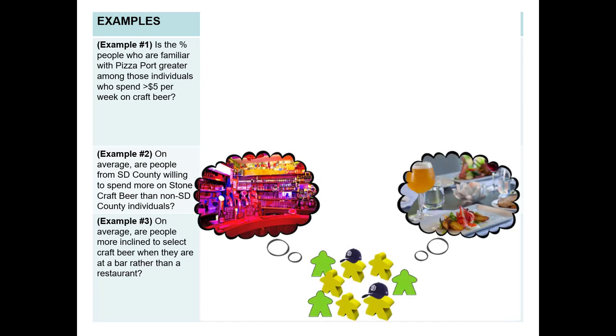In our third example in this video series, we'll ask if, on average, people are more inclined to select a craft beer over other alcoholic beverages when they're at a bar rather than at a restaurant. This example is definitely different than the previous two — we're not separating people into different groups. Instead, we have two different questions asked to all of the same people. In each of these three scenarios, we can use the statistical test selection roadmap.